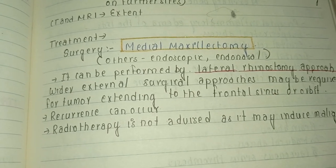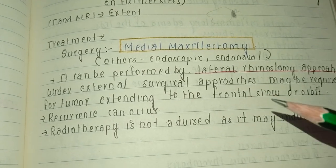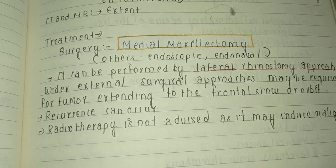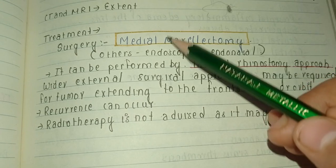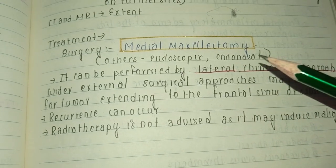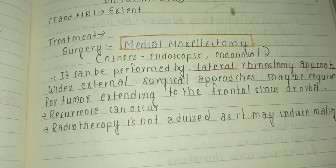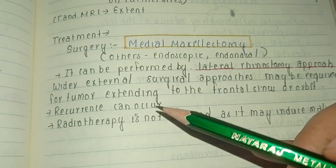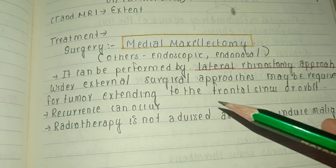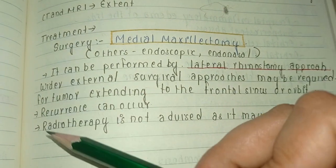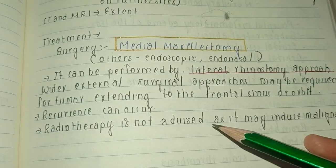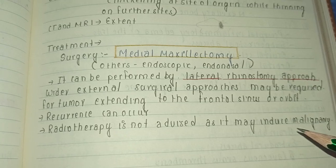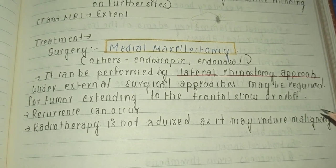A wider external surgical approach may be required for tumors extending to the frontal sinus or orbit. The main treatment remains medial maxillectomy with lateral rhinotomy approach. Recurrence can occur, and radiotherapy is not advised, as it may induce malignancy rather than treating the condition.